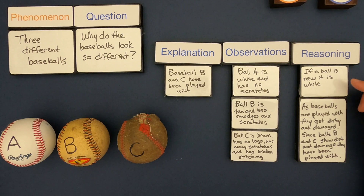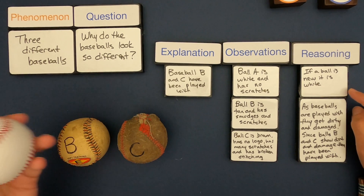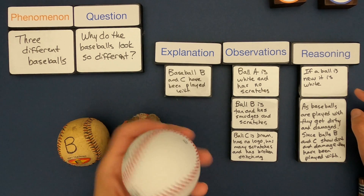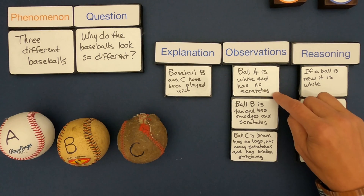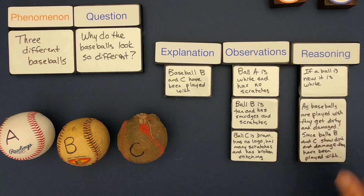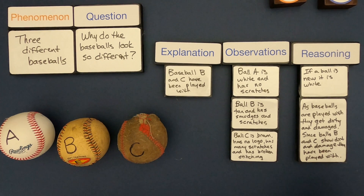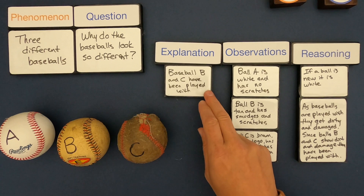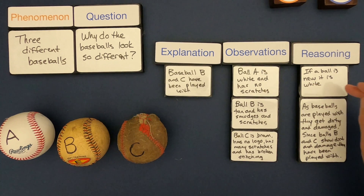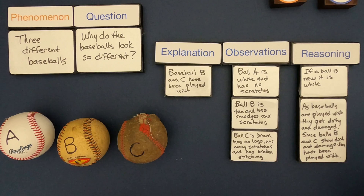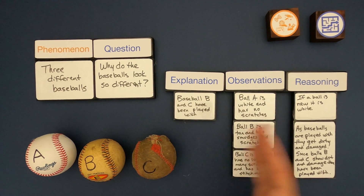My first reasoning: a new ball is white in color and won't have any scratches, so we can think of ball A as a new ball. For balls B and C, as baseballs are played with they get dirty and damaged when hit or thrown into the dirt. Since balls B and C show dirt and damage, they've been played with. Reading the observational explanation from left to right: ball A is new, and since B and C are not white and show damage, they've been played with.